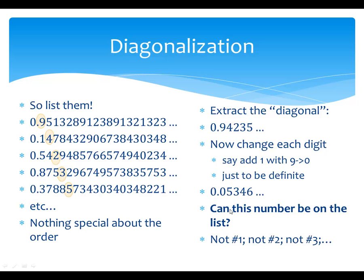Can this number be on the list? Can it be the first number on the list? There's a very easy way to tell it couldn't possibly be: it differs in the first digit. I specifically took the first diagonal digit and changed it so it didn't match. Could it be the second thing on the list? No, because I changed the 4 to a 5. Could it be number 3 on the list? No, because I changed the 2 to a 3, et cetera. There's no way it could be any number on that list, because extracting the diagonal and then flipping digits means it doesn't match anything on the list — it differs in at least that one diagonal place.